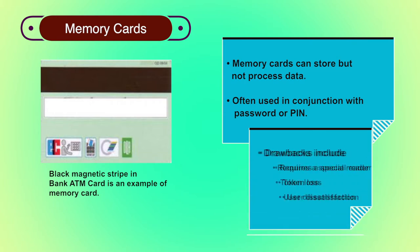A memory card combined with a PIN or password provides significantly greater security than a password alone — an adversary must gain physical possession of the card plus knowledge of the PIN. Drawbacks of memory cards include: first, it requires a special card reader, increasing cost. Second, token loss — a lost token temporarily prevents system access, and if the token is found or stolen, an adversary needs only the PIN to gain unauthorized access. Third, user dissatisfaction — users may find it inconvenient for computer access.